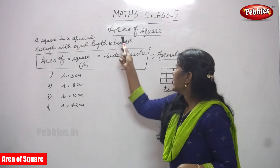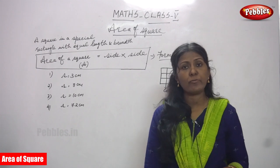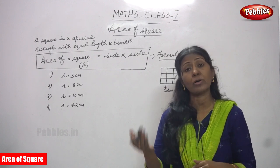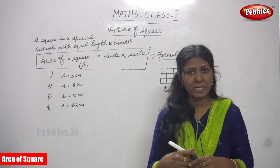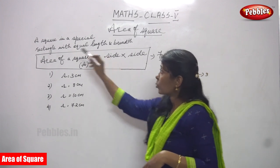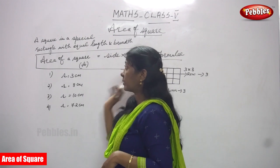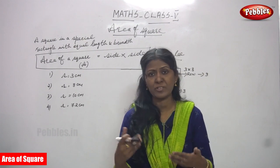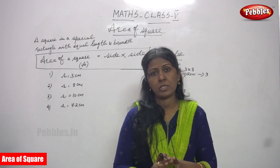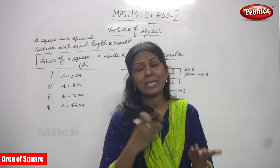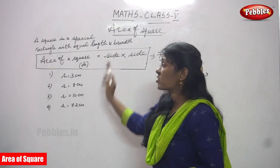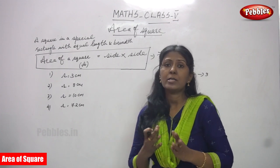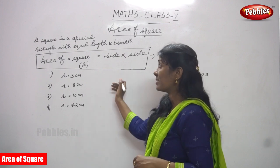Now we are going to see area of a square. A square has four equal sides, as we have seen in the perimeter of the square and its properties. A square is a special rectangle with equal length and breadth — that is, all four sides are equal. Both length and breadth are equal, so a square is a special rectangle with four equal sides.